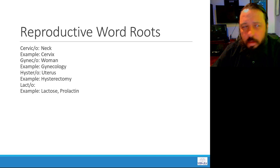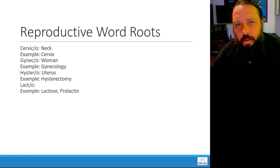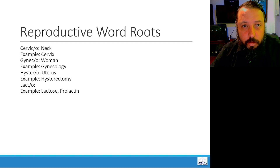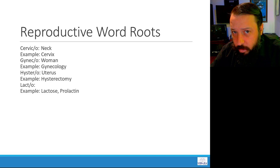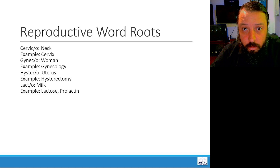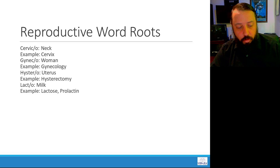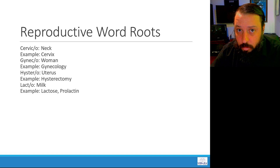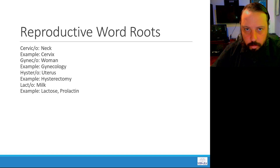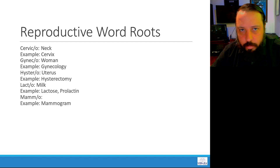Moving on to lacto. There's a hormone made by the pituitary gland called prolactin — it stimulates the production of milk. The pituitary produces prolactin, which tells the mammary glands to produce milk. Lactose is milk sugar. So lacto means milk.